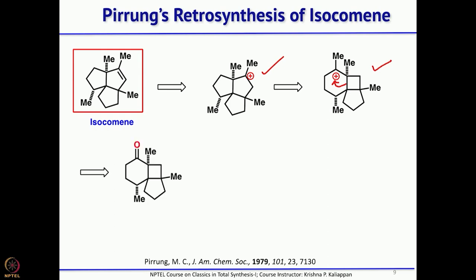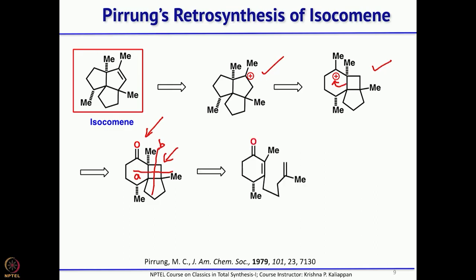To generate the required carbocation, if you have a ketone you can add methyl Grignard or do a Wittig followed by protonation to generate that tertiary carbocation. To get the tricyclic compound, when you see the 4-membered ring you should immediately think about [2+2] photo-cycloaddition. There are 2 possible bond disconnections: breaking bonds A (horizontally) or breaking bonds B (vertically). He chose to break bonds B to form the 4-membered ring, making that compound the precursor.